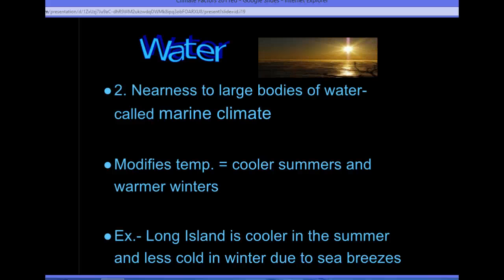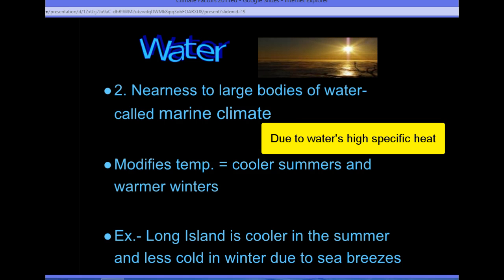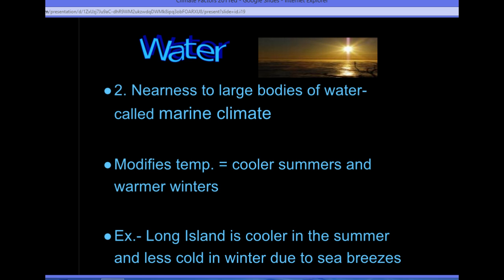We also looked at water in terms of specific heat and how the temperature changes of the land and the water create different pressures. Areas that are near bodies of water, like Long Island, have what's called a marine climate. This means that the temperatures in that area are modified — we have cooler summers and warmer winters. It's not as if we don't have cold winters; it does get very cold here in New York in the winter.